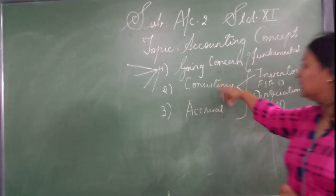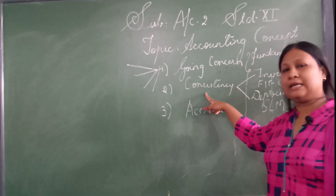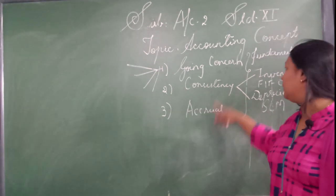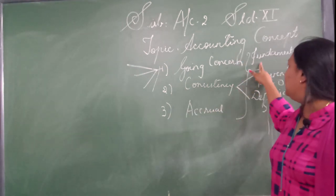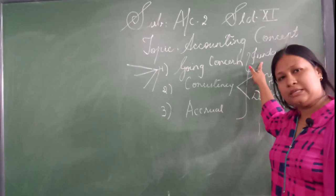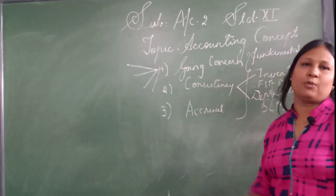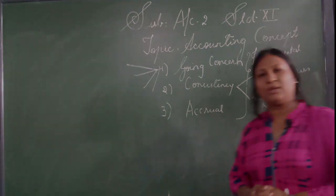Am I clear with all the three? First one was going concern, second is consistency, third is accrual. All these three are called fundamental accounting concepts. Still there are eight more that we will discuss in the next lecture. Thank you.